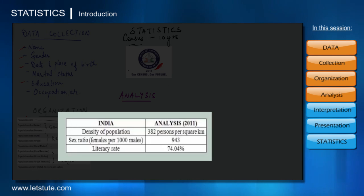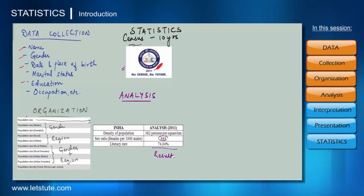From the recent census of 2011, it was found that the density of population in India is 382 persons per square kilometer or the sex ratio which is females per thousand males is 943. So these kinds of reports or analysis are the results that we get from this kind of data.